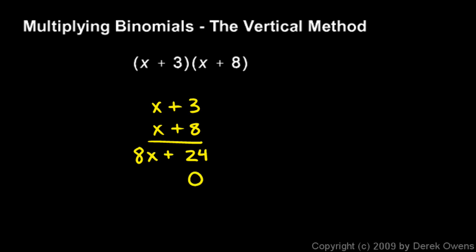Then I'll put a 0 down here as a placeholder, and then my next move is to multiply x times 3, and that gives me 3x. Then I multiply x times x and that gives me x squared, and I put that here. Then I draw a line and I add these two rows.